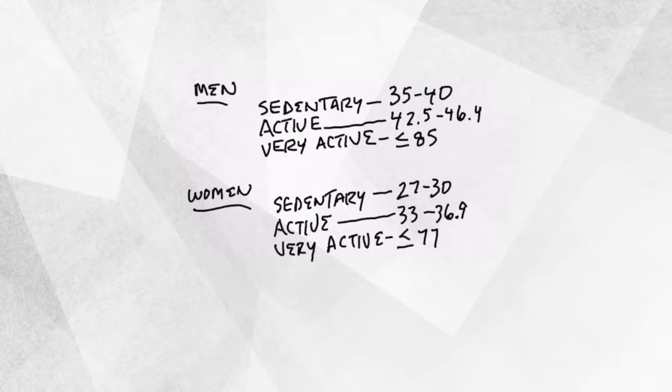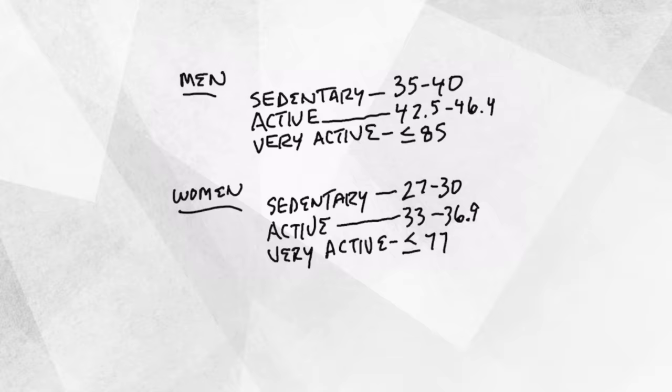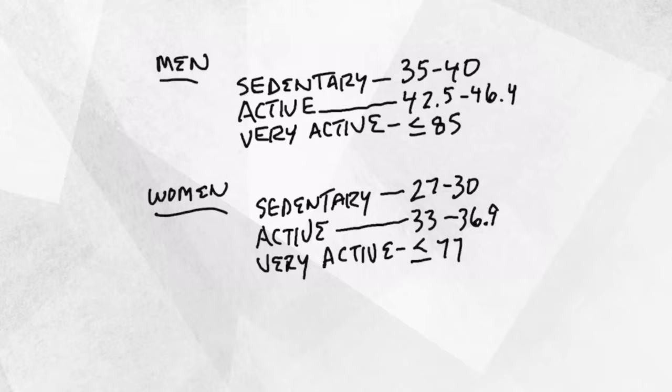And then for a woman, it's a little lower. Sedentary would be between 27 and 30. Active would be between 33 and 36.9. And then very active, you know, roughly on average, it's like 77.